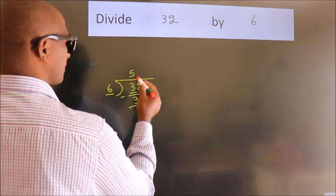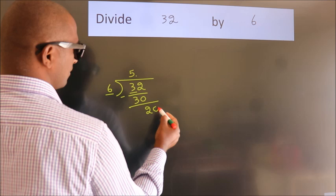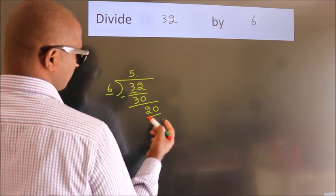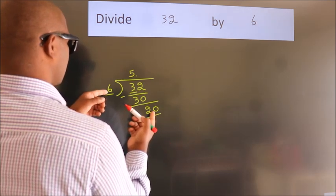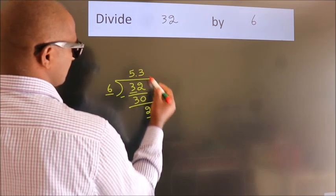So what we do is, we put dot, take 0. So 20. A number close to 20 in 6 table is 6 threes 18.